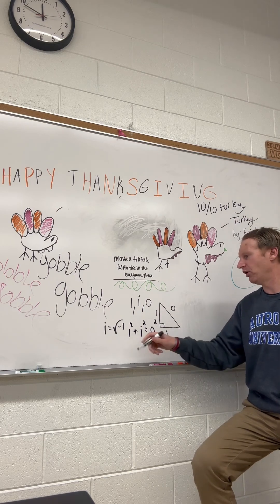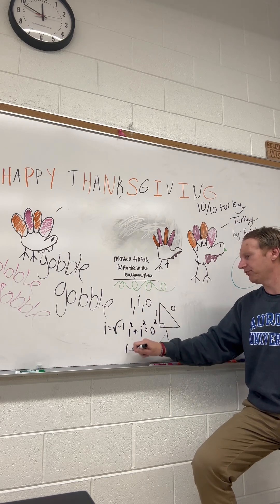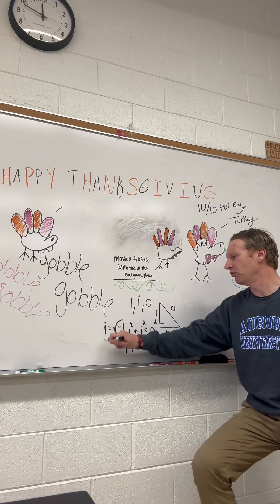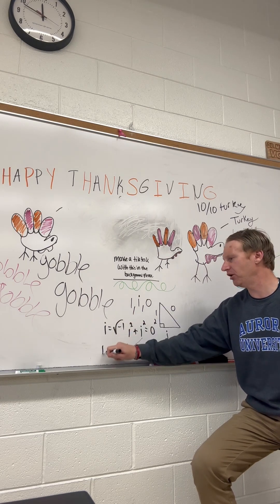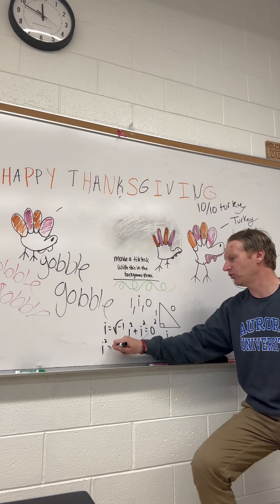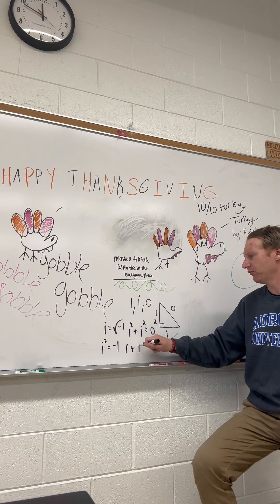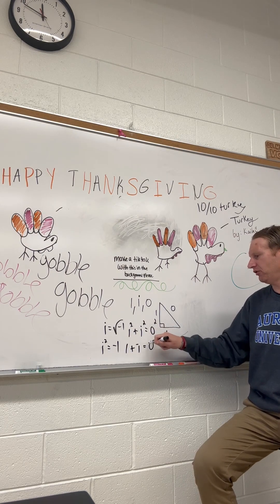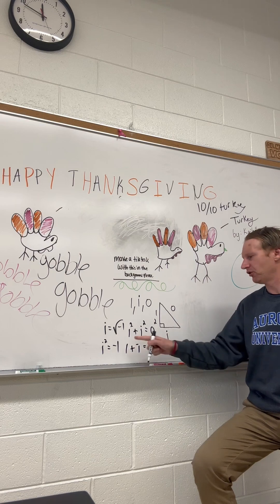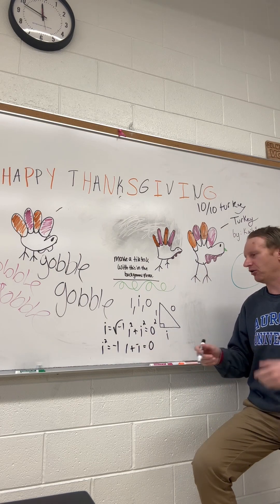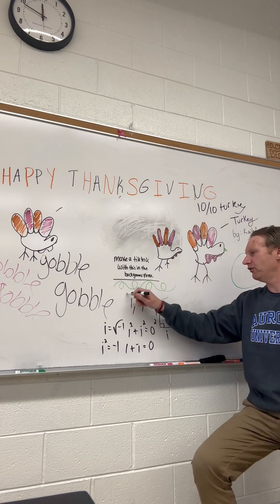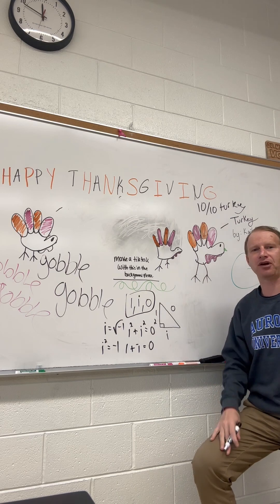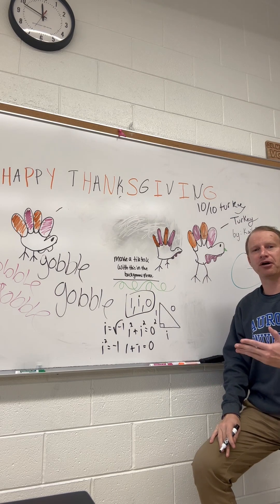Well, one squared is one. We all know that i squared — if i equals the square root of negative one, then i squared equals negative one. So we have one plus negative one. We know zero squared is zero. So what's one plus negative one? Zero. So these three numbers, one, i, and zero, happen to satisfy the Pythagorean theorem.